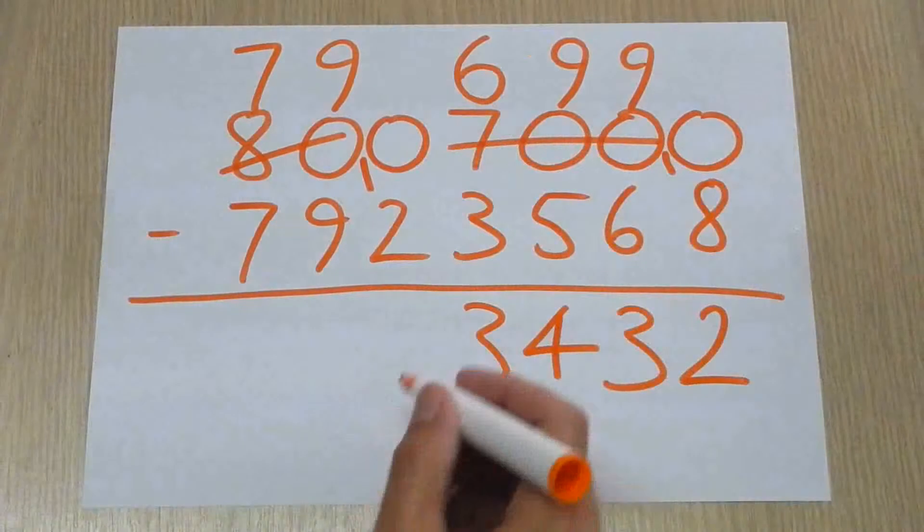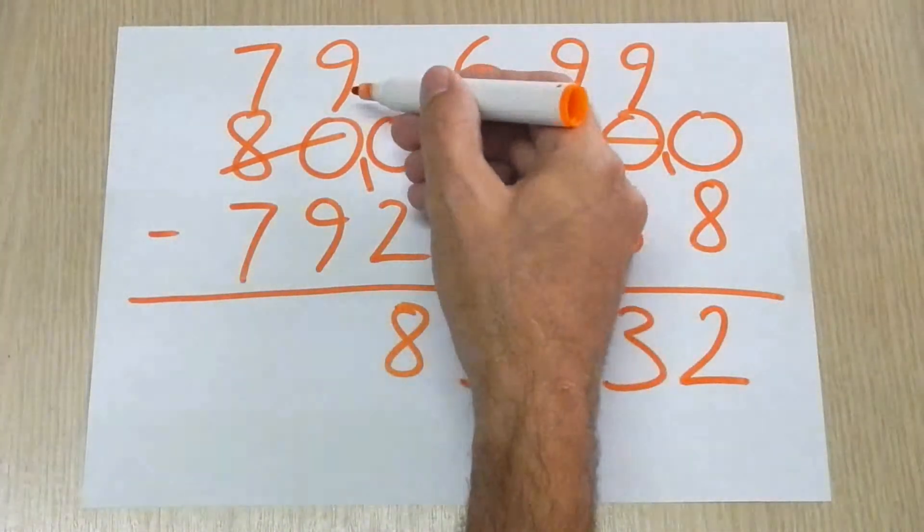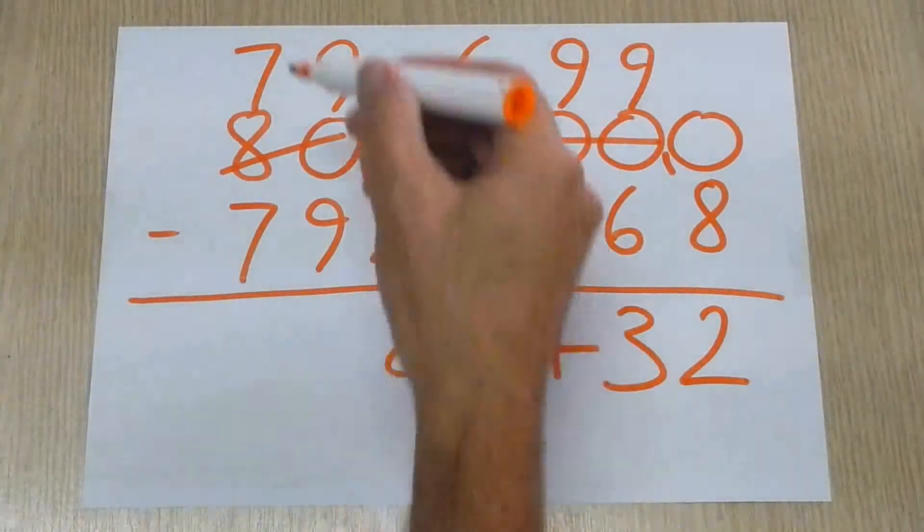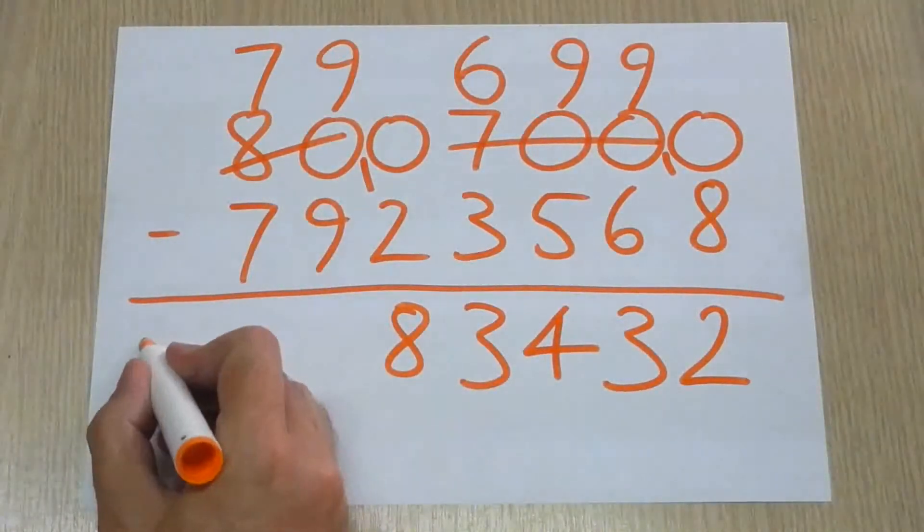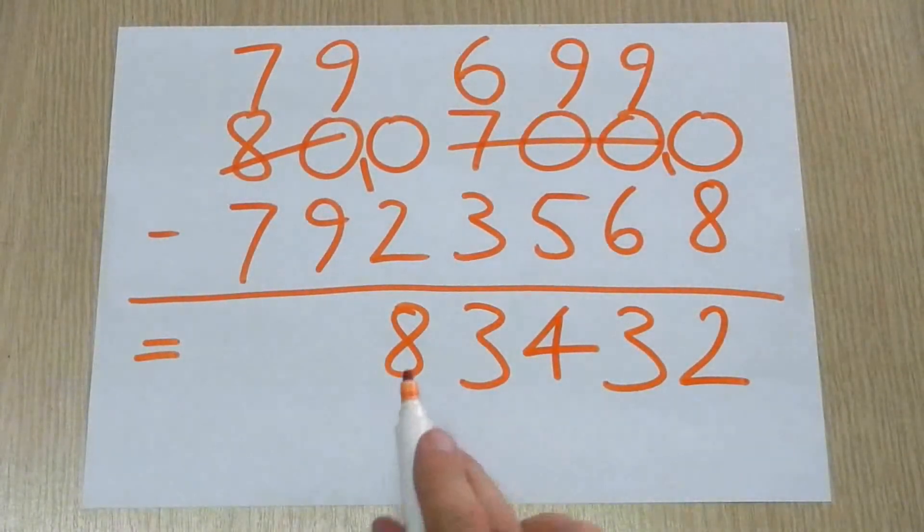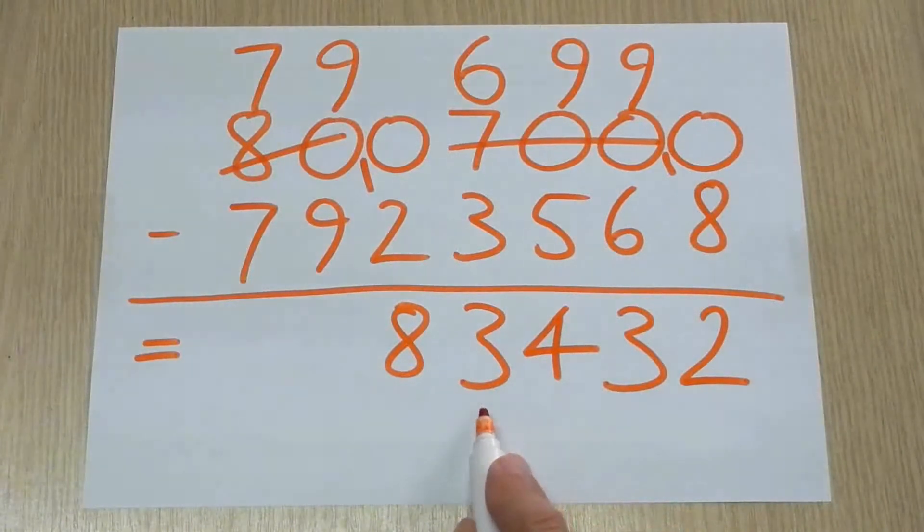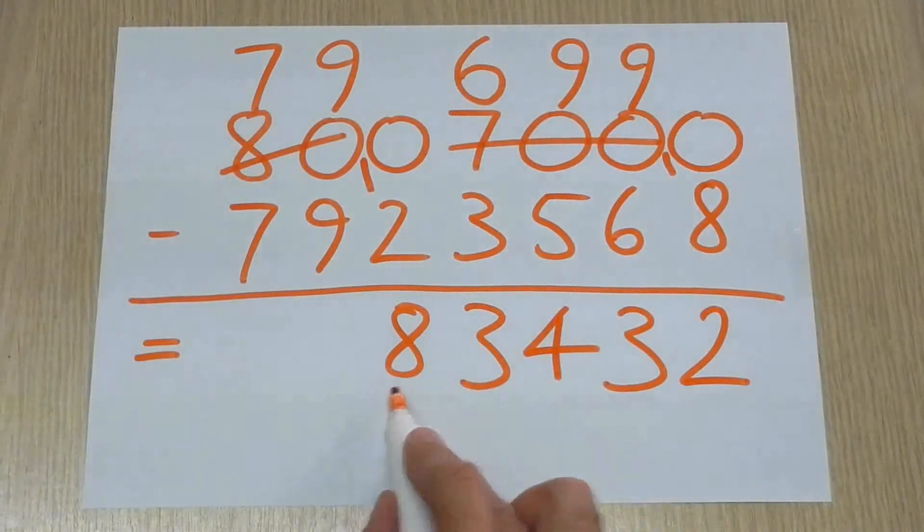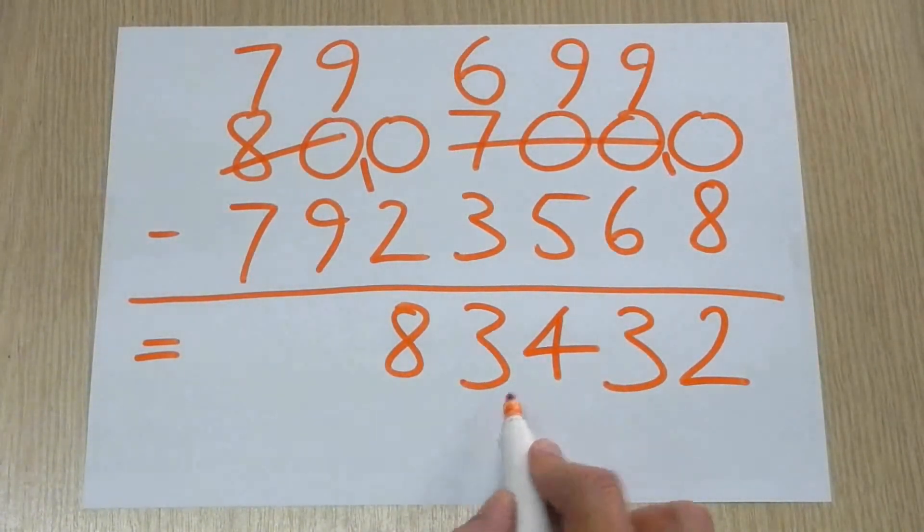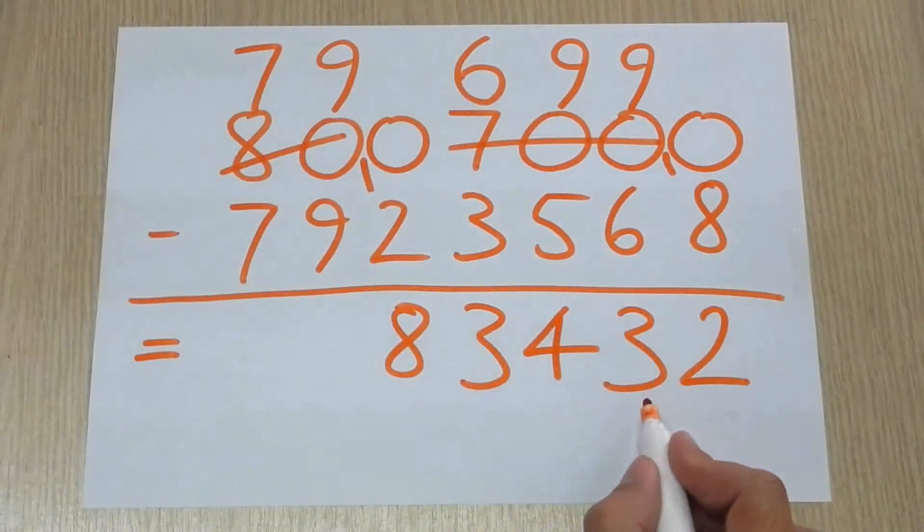So, 10 take away 2 is 8, 9 take away 9 is 0, 7 take away 7 is 0, so our whole answer there is 83,432.